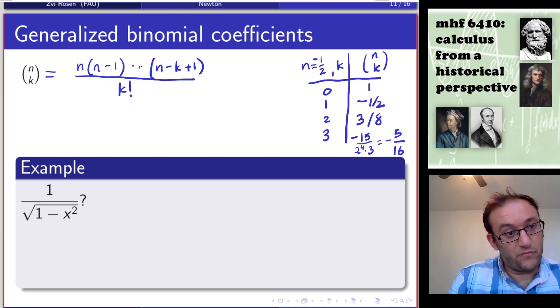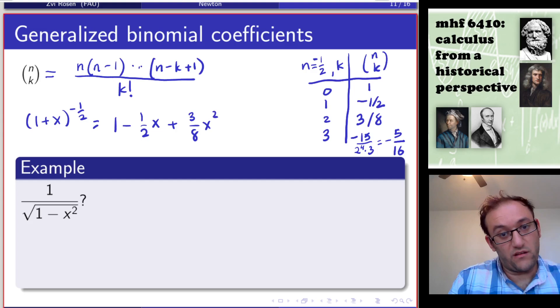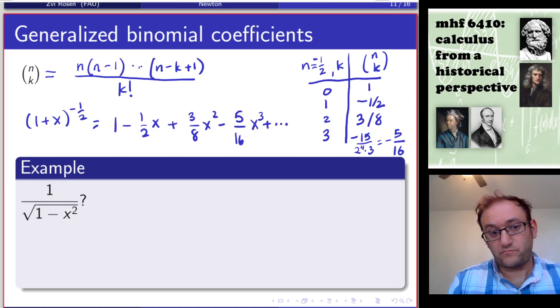So this tells us that 1 plus x to the minus 1 half will be given by 1 minus 1 half times x plus 3 eighths times x squared minus 5 sixteenths x cubed, etc. That gives us the power to describe a lot more functions, algebraic functions involving roots, involving polynomial powers in the denominator as infinite series, which we wouldn't have been able to do otherwise.